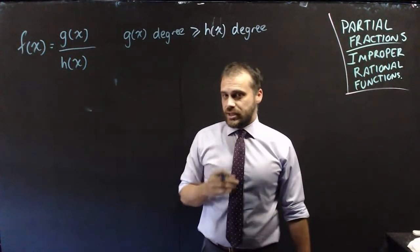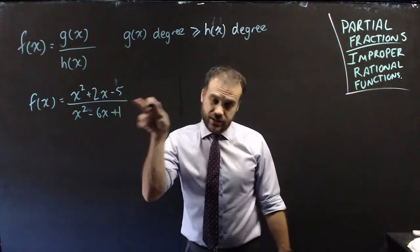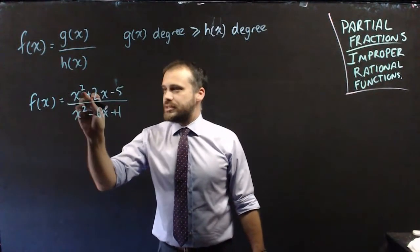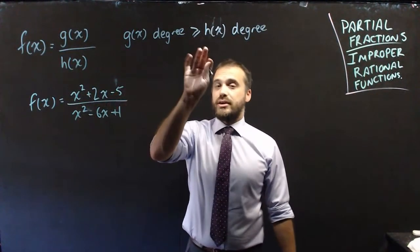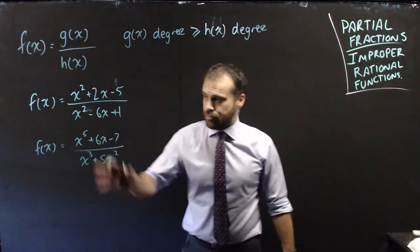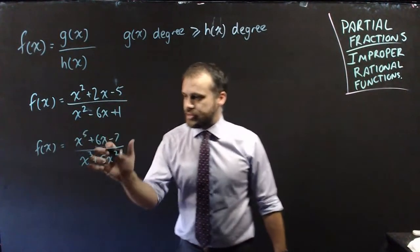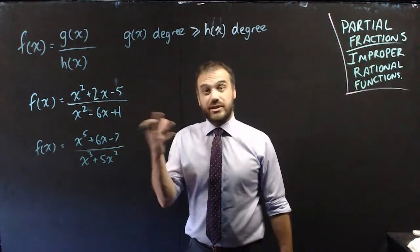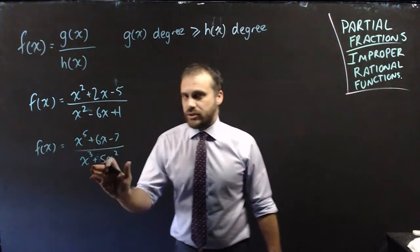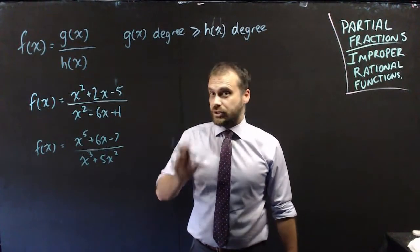A couple of examples of improper rational functions: this is an improper rational function because the degrees are the same — greater than or equal to, so it's improper. This is definitely improper: x to the 5 over x to the 3. Don't worry about all the other stuff. This is degree 5, this is degree 3, so this is an improper function.